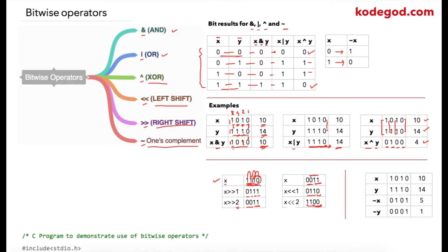Now we are going to check the final table for one's complement. Assuming x is 1010, which equals decimal 10, and y is 1110, which equals decimal 14. When we apply one's complement to x, all bits are inverted: ones become zeros and zeros become ones, giving an equivalent decimal value of 5. Similarly, the one's complement of y — inverting 1110 — gives 0001, which is equivalent to decimal value 1.